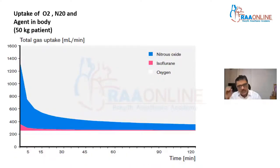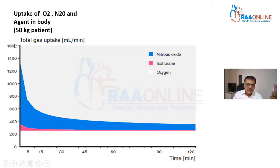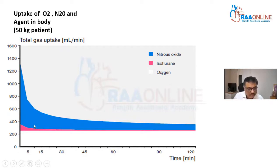Let us look at another graph to understand why low-flow anesthesia is better. This graph shows the uptake of gases in the body, whether the anesthesia is low flow or high flow. The blue color shows uptake of nitrous oxide into the body, another color shows uptake of the inhalation agent, and white shows the uptake of oxygen. The vertical axis is volume and the horizontal axis is duration of anesthesia. Notably, nitrous uptake is higher for the first 15 minutes — up to 1,400 ml to 2 liters.